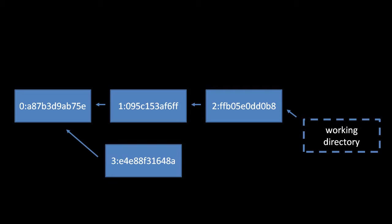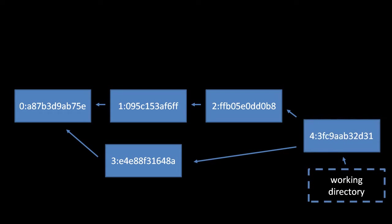We're going to merge the working directory with local revision 3. This merges together the state of the working directory — its manifest and its files — with the state of changeset 3 and its version of the files. The product of that merger is placed in the working directory, and then the working directory has revision 3 as its other parent. If we perform a commit, this creates a new changeset with parents revision 2 and revision 3, and the working directory now just has the single parent, which is the new changeset.